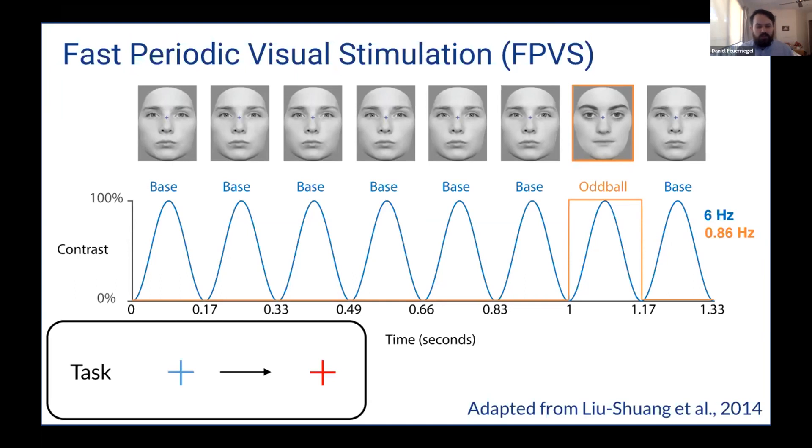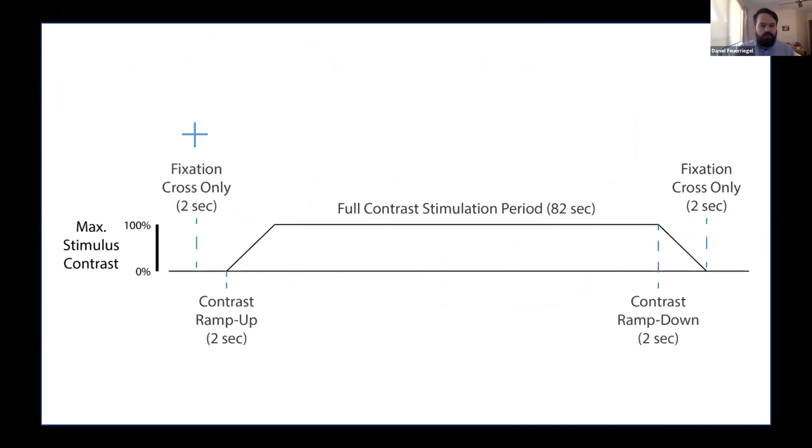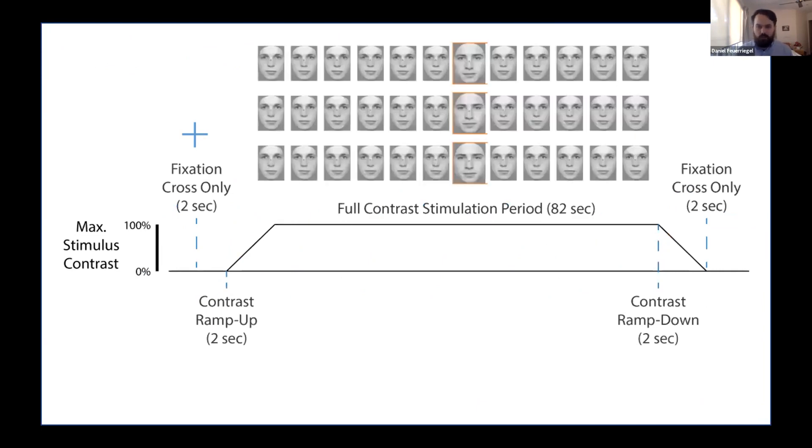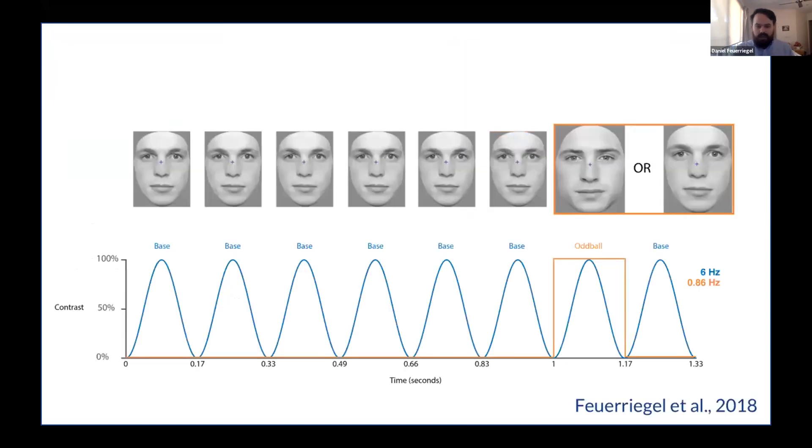And participants' task was to detect a fixation cross color change from blue to red. So in these sequences, briefly, people usually see a fixation cross, then the contrast ramps up over two seconds. We have a full contrast stimulation period, whereas the oddball and the base stimuli each appear at their respective periodicities, then a ramp down and a fixation cross period. And in these designs, you can manipulate the relative probabilities of each oddball that might appear in the sequence. So here's an example from an older study where we had the base face and then the oddball could either be the same face identity as this base face or a different face identity. And the relative probability of these can be manipulated. And because these oddballs are periodic, this means that participants can come to expect specific oddball face identities at specific times. And one of the nice things about this is that basically by presenting a whole bunch of base faces between these, you can control for immediate stimulus repetition effects by continuously adapting the system to that base face.